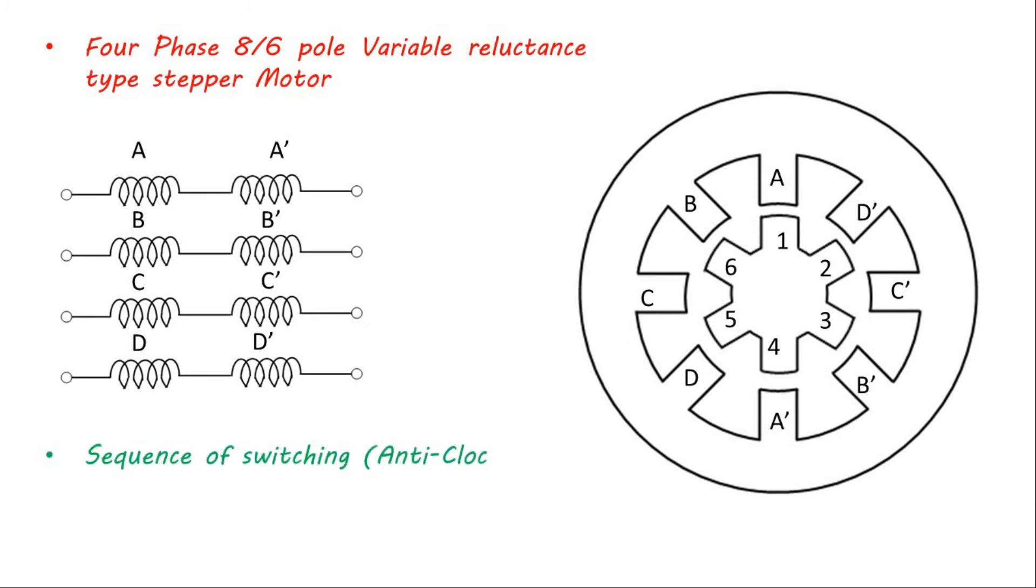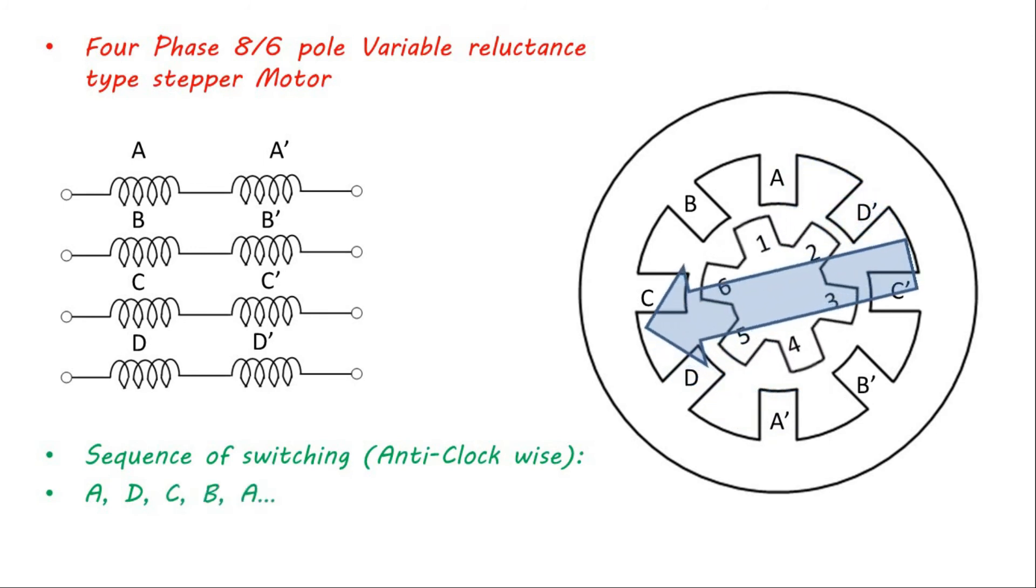The reverse rotation in anticlockwise direction can be obtained by reversing the phase sequences. The sequence will be phase A, then phase D, then phase C, then phase B, then phase A and so on.